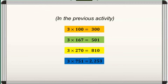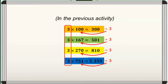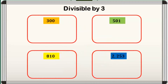In our previous activity, we have multiplied 4 numbers with 3 and get the following products: 300, 501, 810, and 2,253. Since 3 is one of the factors of these numbers, we conclude that they are divisible by 3. It is because multiplication and division are two opposite operations. Hence, we can divide the following products by 3 and get the quotients that are the same with our original numbers without remainder. Now, let's focus on these 4 numbers that are divisible by 3. We will try to compute the sum of their digits. For the number 300, its digits are 3, 0, and 0. So getting their sum, we have 3 plus 0 plus 0, which is equal to 3.